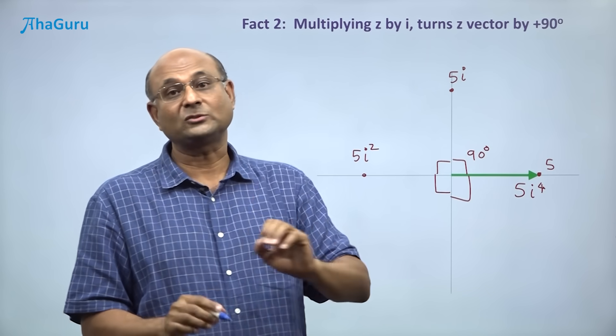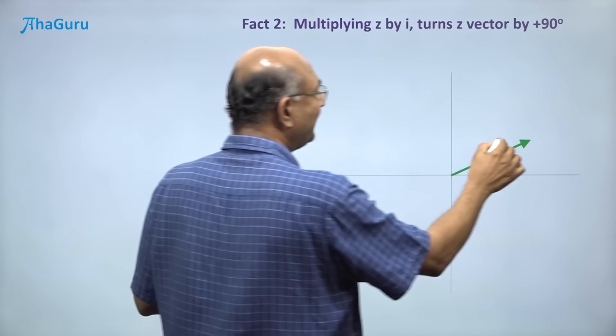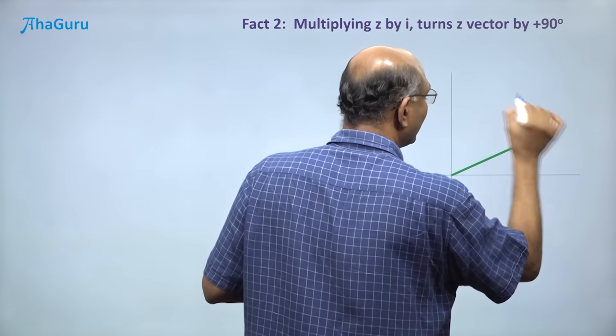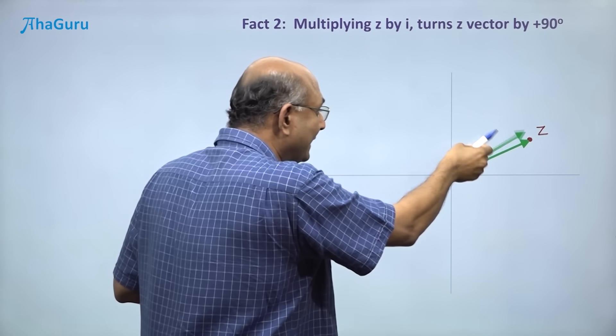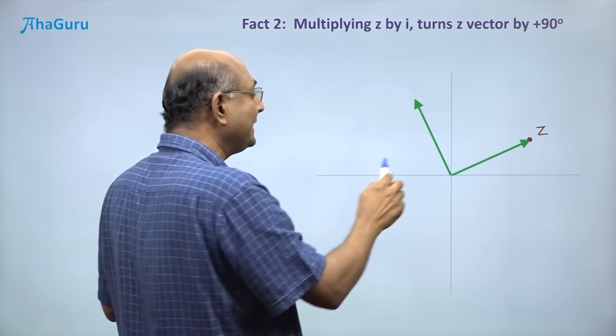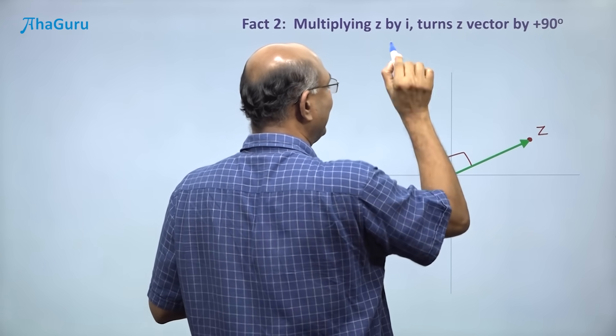But this is not only true for points on the x-axis. It is true for any point z. So if I pick a point here z and I multiply z by i, iz will basically be 90 degree turn of this vector. So this point is iz.